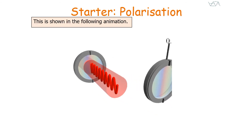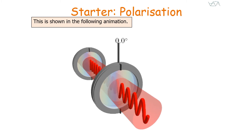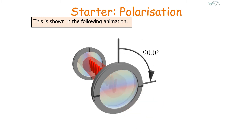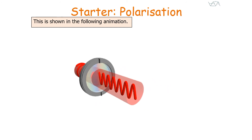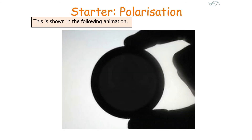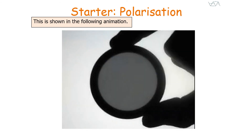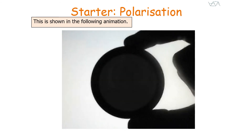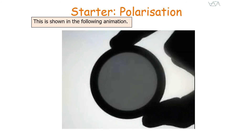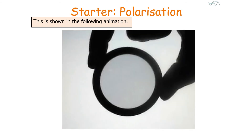When the two filters are aligned parallel to each other, all of the wave can pass through in polarised form. But at 90 degrees, none of the wave will pass through the second filter. We can see this in the real world: when the filters are at zero degrees to each other, all the light passes through and it is see-through, whilst when the two filters are at 90 degrees to each other, it goes black as none of the light can pass through.